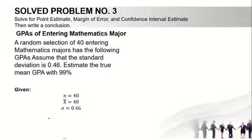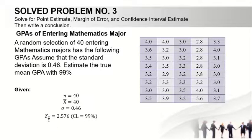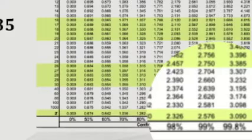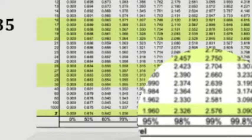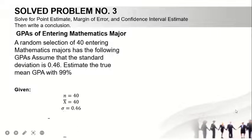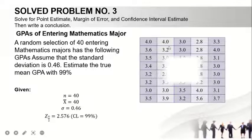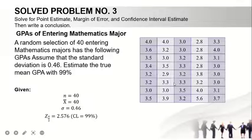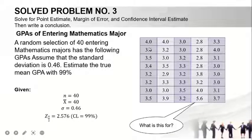Next, standard deviation is 0.46. Next, we have the critical value with the confidence level of 99%. Let's look at this - your critical value, we have 2.576. There it is. Now we have this chart that has the data. What is this for? What purpose will you use this? Now we'll explain this.